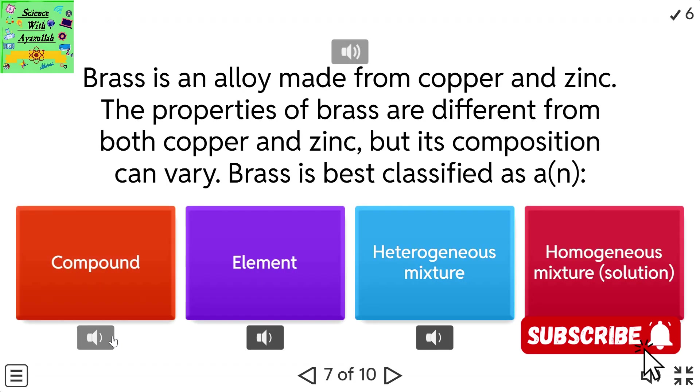Brass is an alloy made from copper and zinc. The properties of brass are different from both copper and zinc, but its composition can vary. Brass is best classified as a compound, element, heterogeneous mixture, homogeneous mixture, or solution.